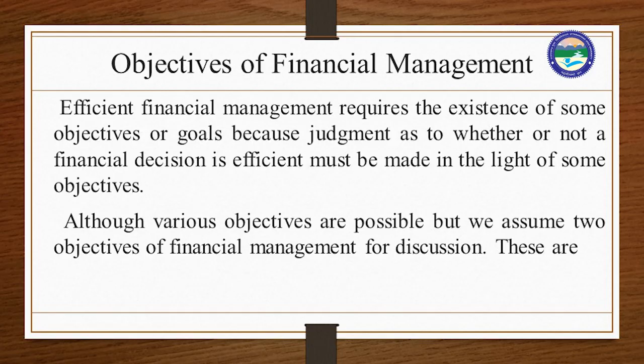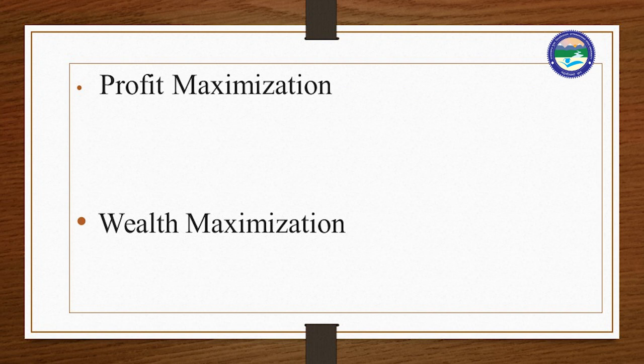First, objectives of financial management. Efficient financial management requires the existence of some objectives or goals, because judgment as to whether or not a financial decision is efficient must be made in the light of some objectives. The three financial decisions — investment decision, financing decision, and dividend decision — are all taken with some objectives. We assume two objectives of financial management here: wealth maximization and profit maximization.